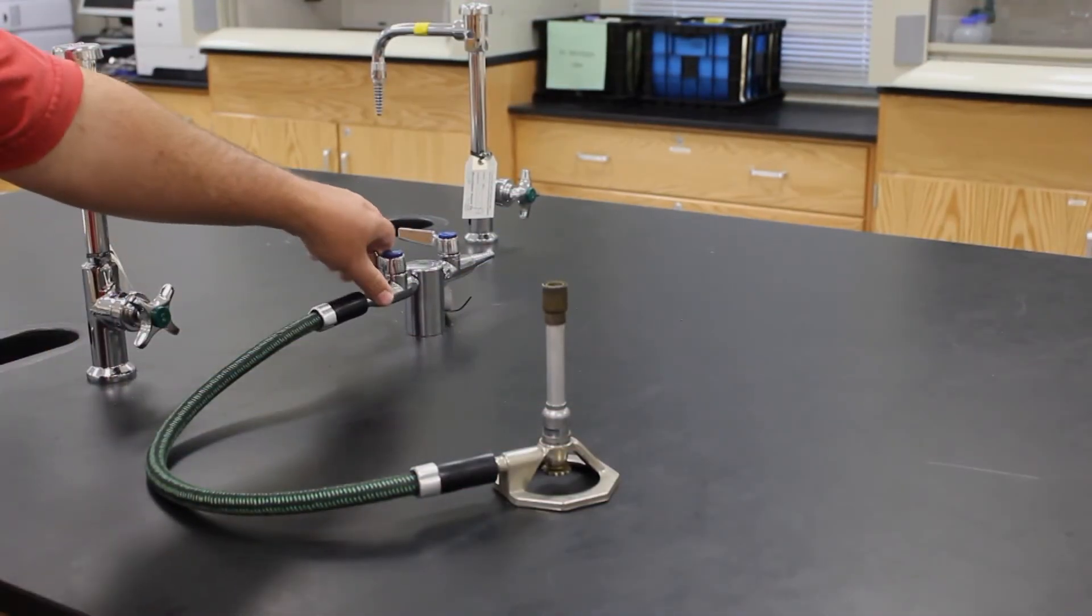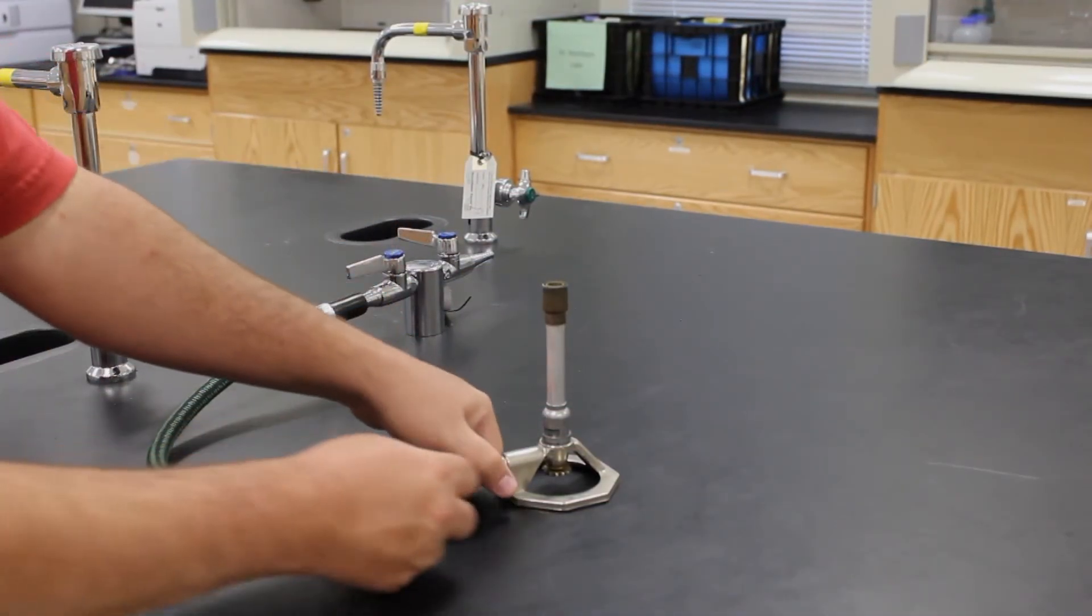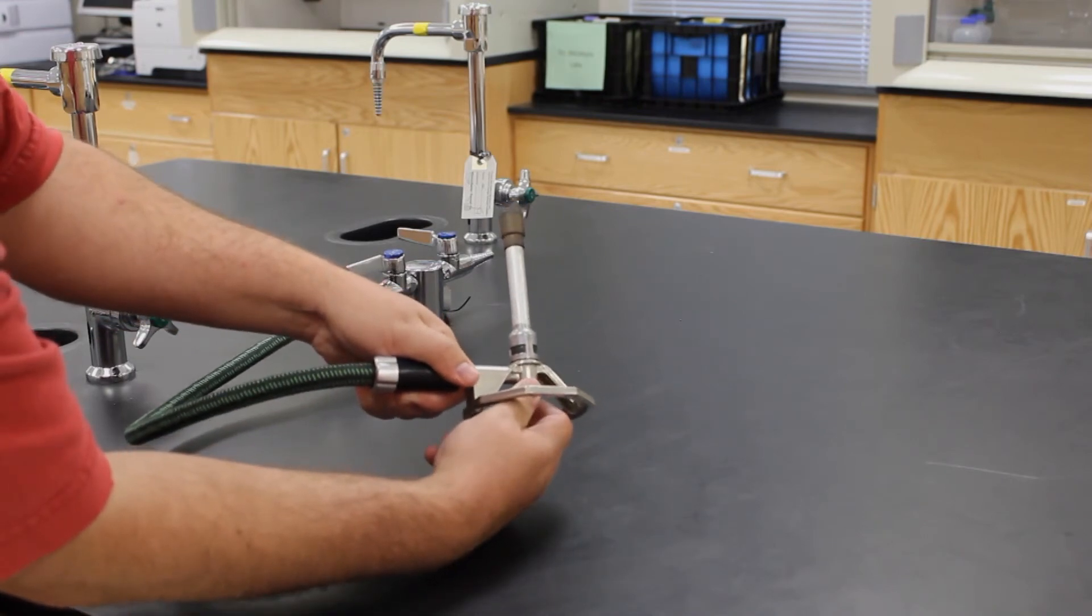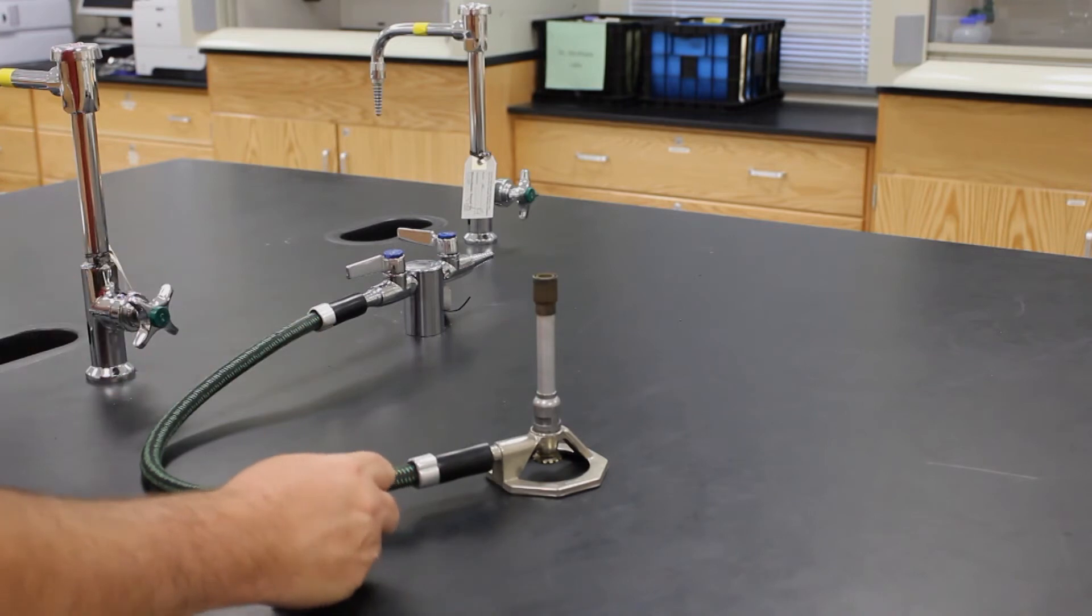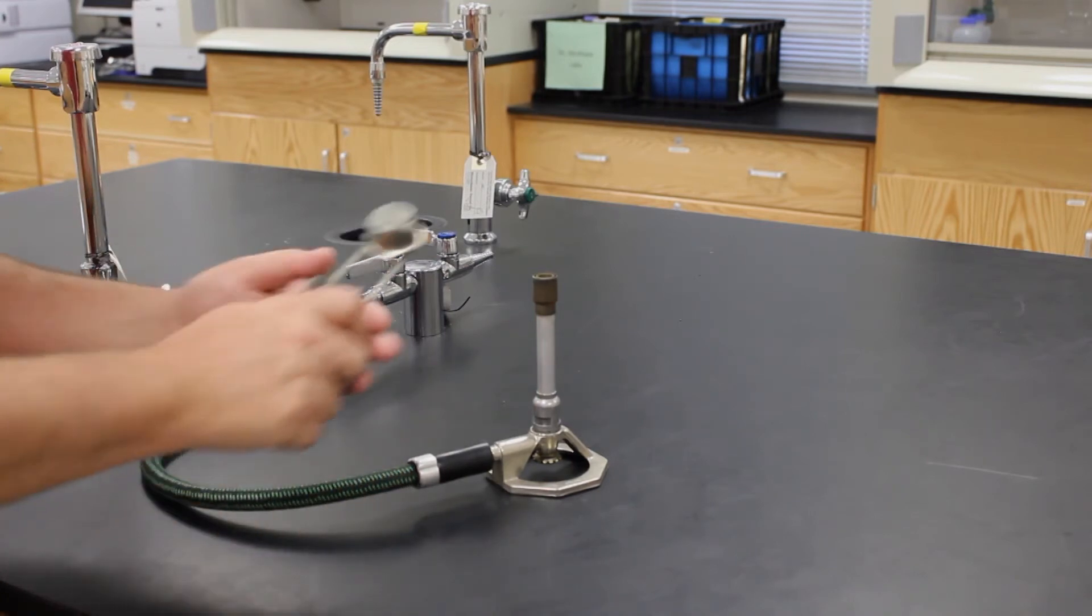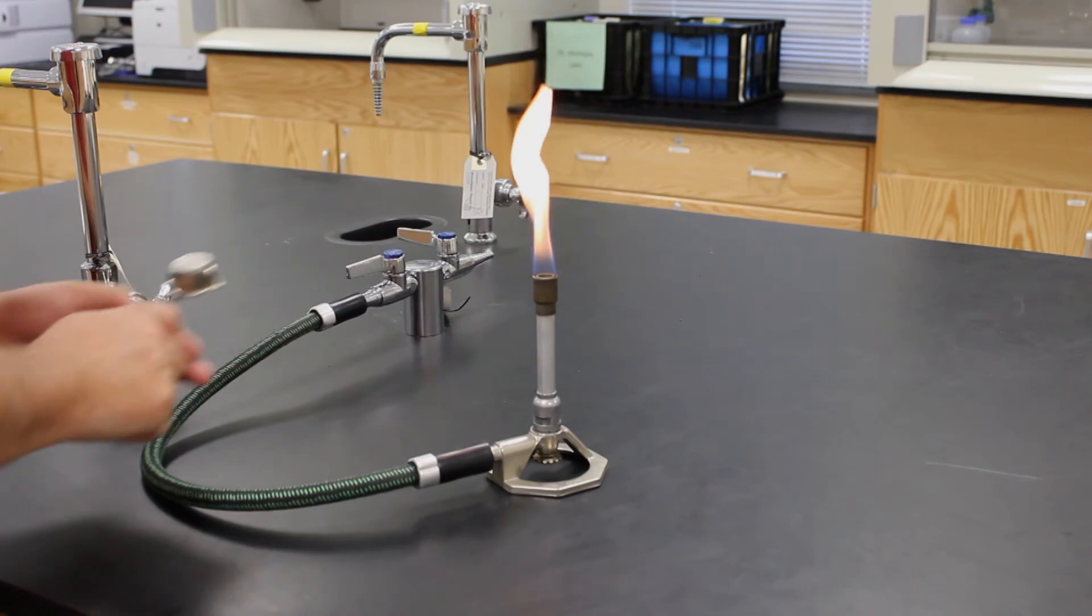First, you will check the hose and its connections and then turn on the valve on the desk. Open the needle valve on the burner approximately a quarter of a turn or until you hear the gas. Quickly use a striker to light the burner. Make sure to keep your hands back.